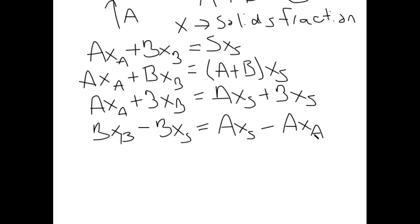Now what we can do is, because the terms on the left are both multiplied by B, we can actually pull B out and put the rest of the information in parentheses. We can do the exact same thing on the right hand side, so we're just going to pull A out.